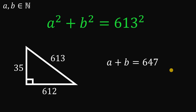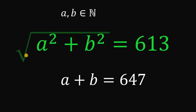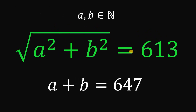And this is our answer to this question. Therefore, given the equation square root of a squared plus b squared equals 613, where a and b are both natural numbers, the numerical value of a plus b is 647. And as always, we are done.